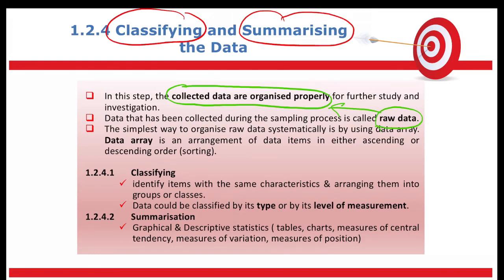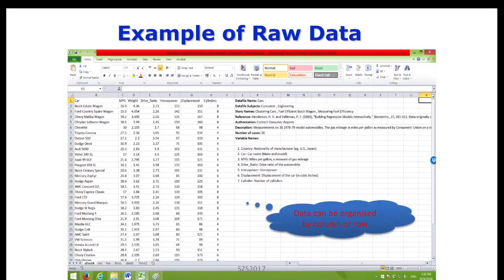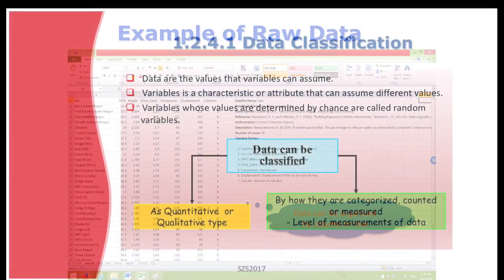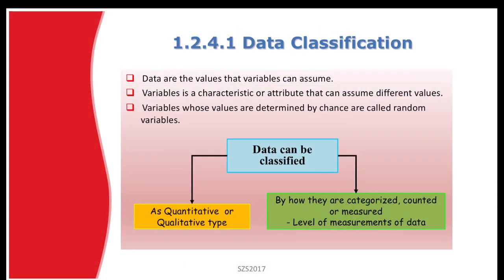Raw data will look mixed — gender, location, all jumbled together. That is raw data and you need to classify it. How to classify your data — we call this data classification.